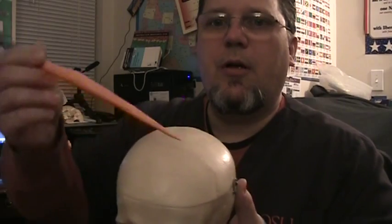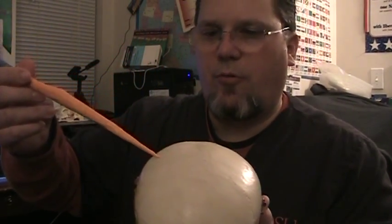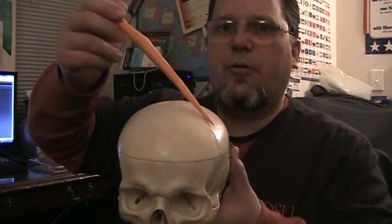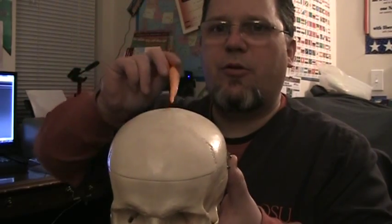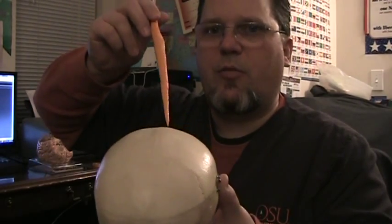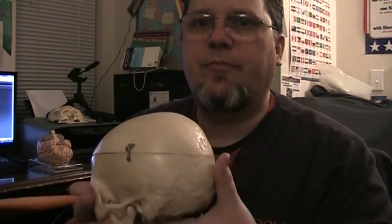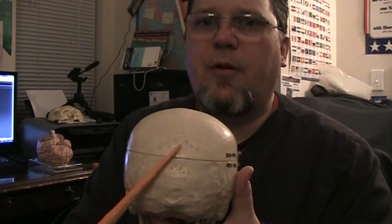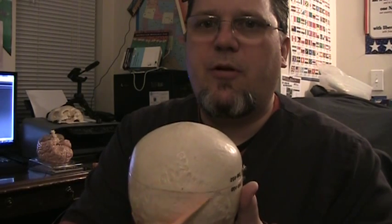Sutures: the coronal suture, going in the coronal plane. The sagittal suture, within the sagittal plane. The squamosal suture — squamous meaning thin and flat — going over the squamous portion of the temporal bone. And the lambdoidal suture, going over the occipital bone. It creates, with the sagittal suture, the letter lambda.